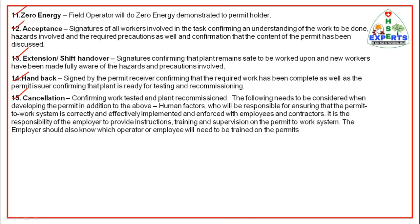The following should also be considered when developing the permit in addition to the above. Common factors: who will be responsible for ensuring that the permit to work system is correctly and effectively implemented and enforced with employees and contractors. It is the responsibility of the employer to provide instructions, training and supervision on the permit to work system, and the employer should also know which operators or employees will need to be trained on the permits. These sections are common to all permits.